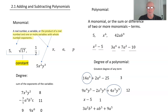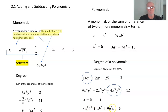Now look at this one: 3a²b³ + ab⁵ + 9a⁵. Pause the presentation, figure out the degree, and then resume. Did you say the degree is 6? The first term: 2 + 3 = 5. The last term: a to the fifth, that's 5. But the middle term has a to the first power and b to the fifth — 1 + 5 = 6. So the degree of that polynomial is 6.